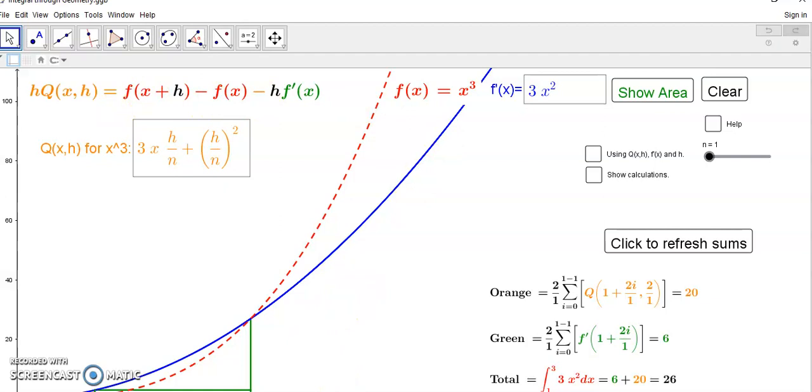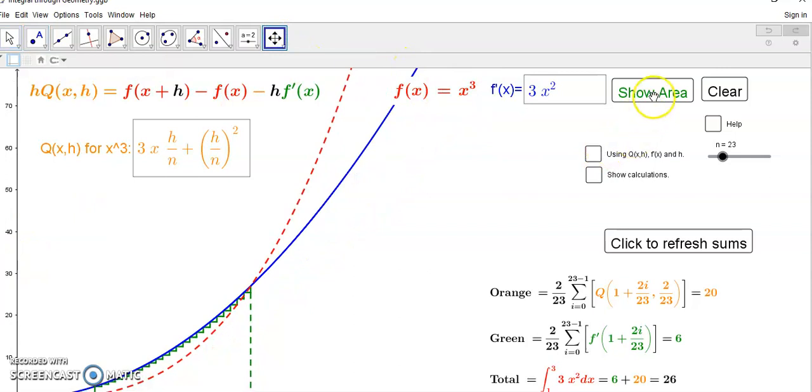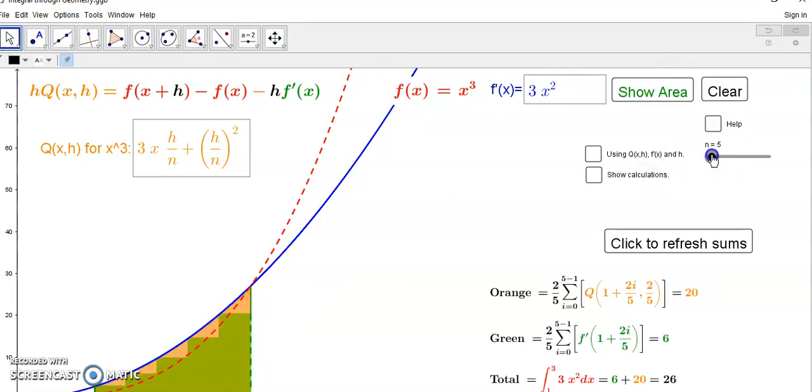So now let's see what happens as we increase the value of n. It doesn't really have any effect on the, as you can see, on the total sum right. And we can show the area, that's the area underneath there.